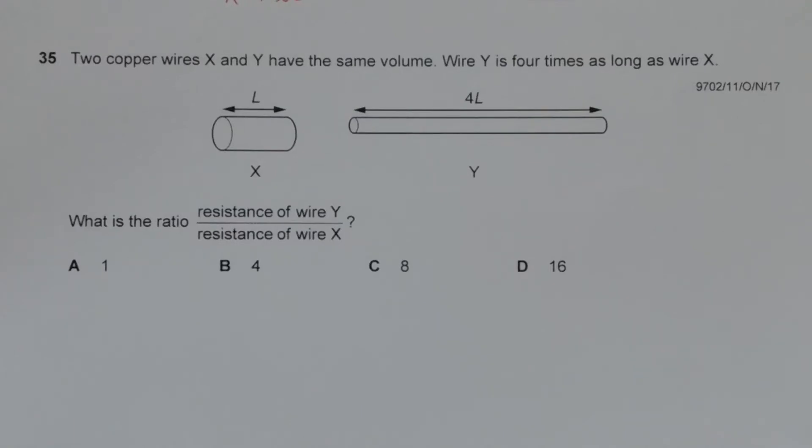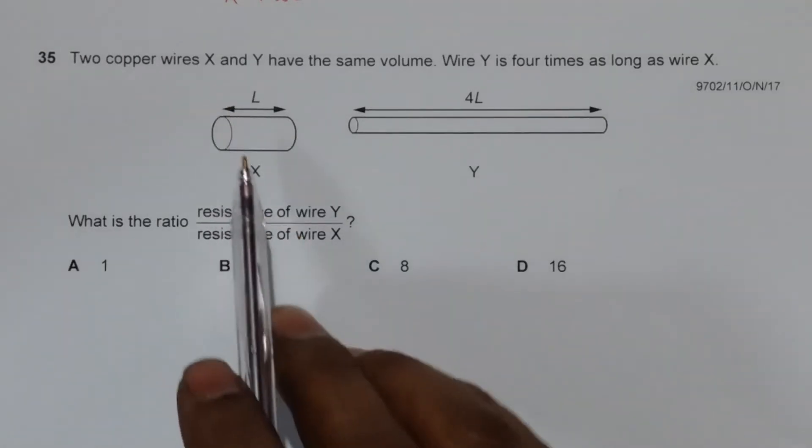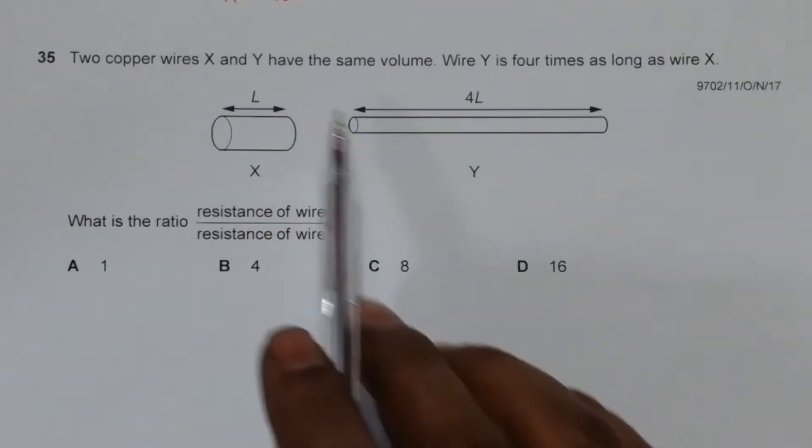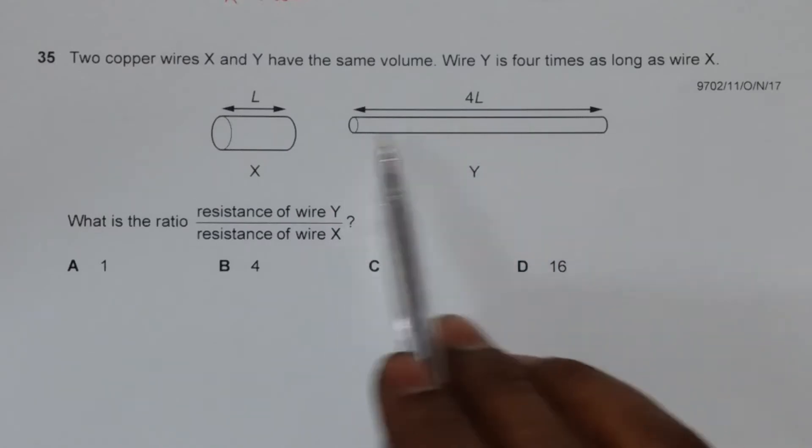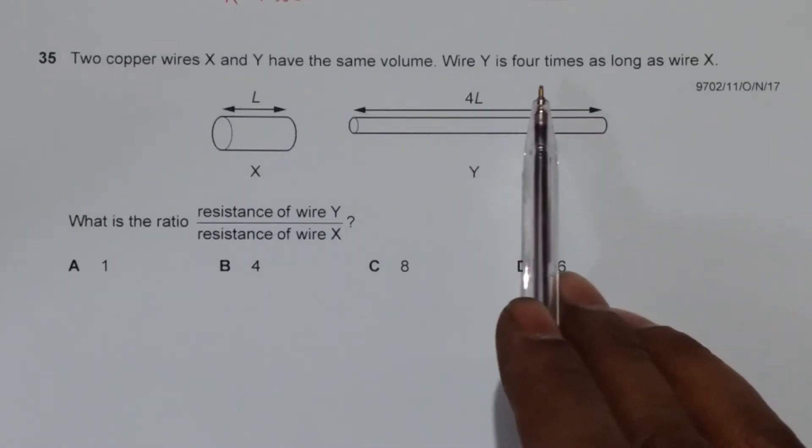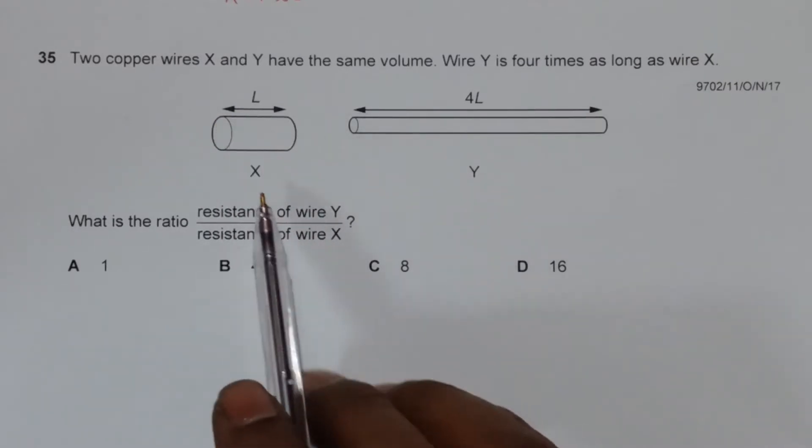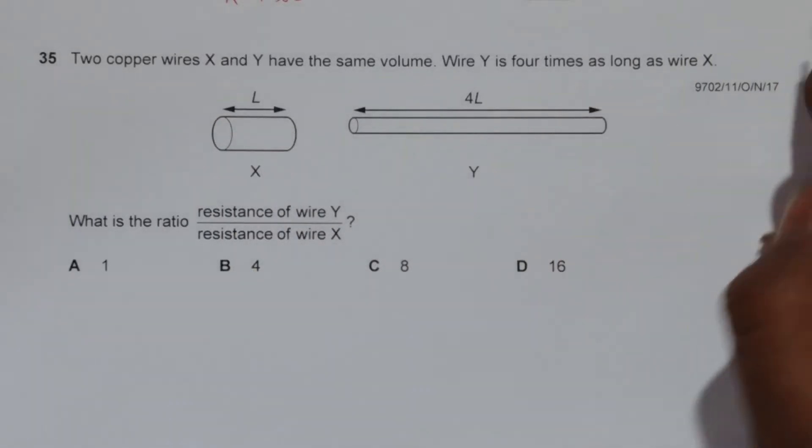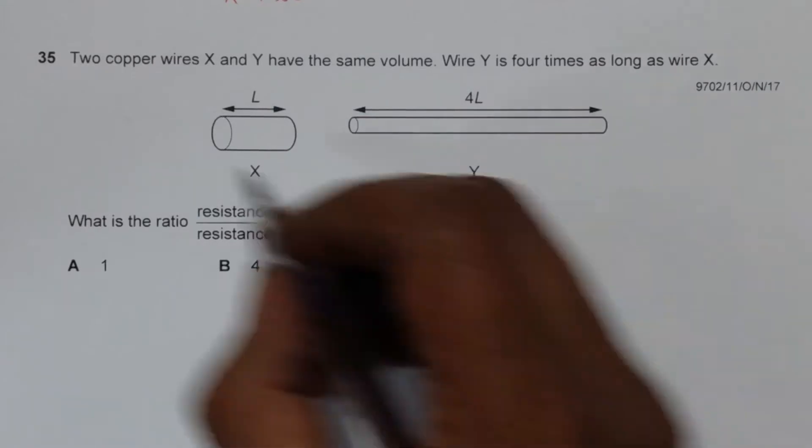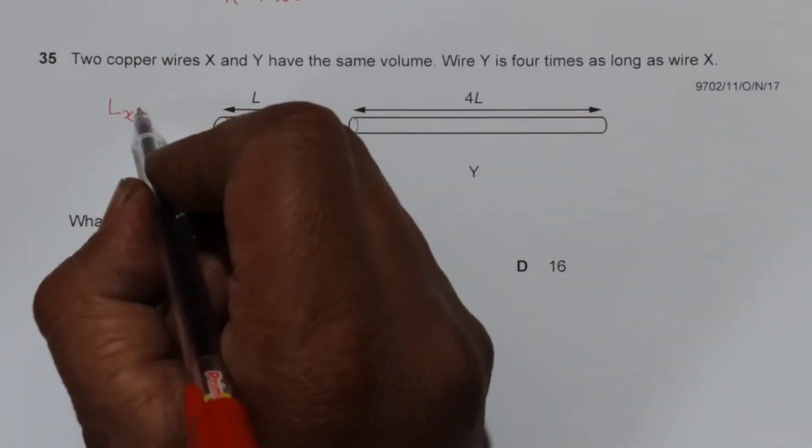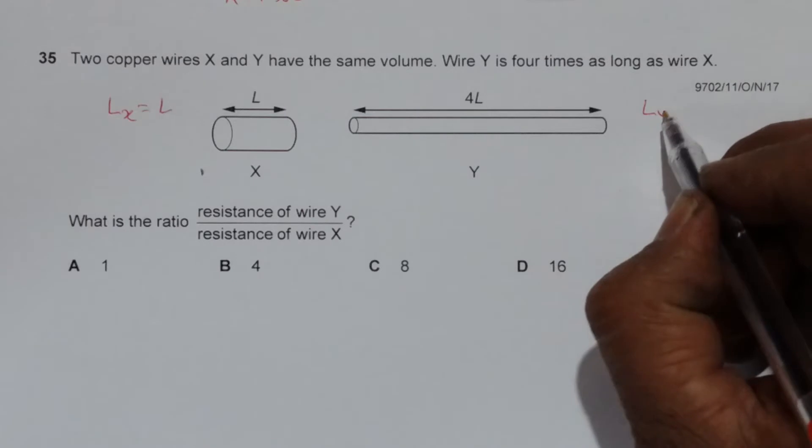This is question number 35 of paper 1, October November 2017. It says two copper wires X and Y have the same volume, and wire Y is four times as long as wire X. So we can write the length of X equal to L, and the length of Y is equal to 4L.